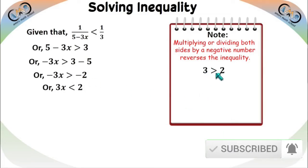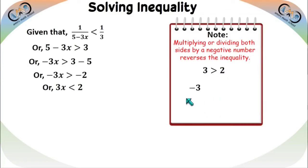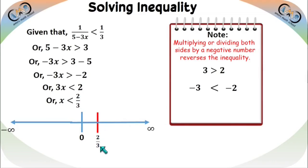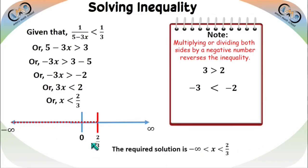For example, 3 > 2; multiplying both sides by −1 gives −3 and −2, and −2 > −3, so the inequality reverses. Applying this: from −3x > −2, dividing both sides by −3 (negative) reverses the sign, giving x < 2/3. On the number line, 2/3 is positive; x < 2/3 means the solution lies to the left. The required solution is x ∈ (−∞, 2/3).